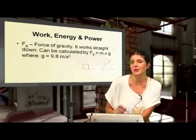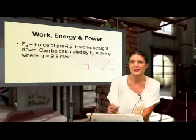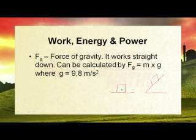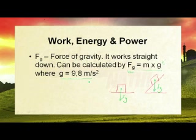The next force is the gravitational force, which you're familiar with — gravity always works straight down from the center of the object. For an object on a flat surface or on a slope, gravity still acts straight down from the center. The gravitational force is calculated using the formula: mass times gravitational acceleration, with g always given as 9.8 m/s².